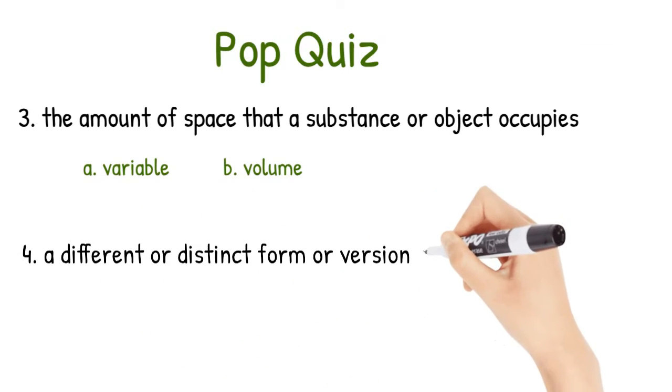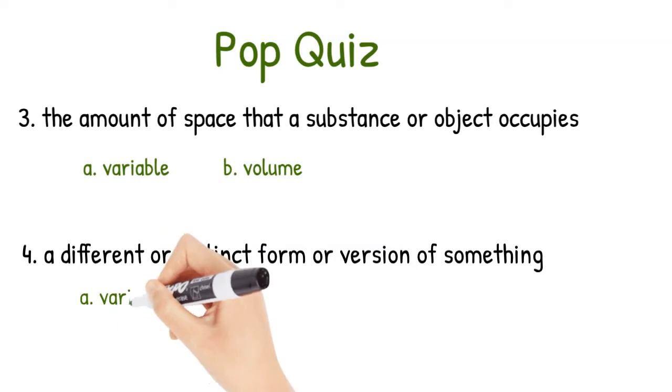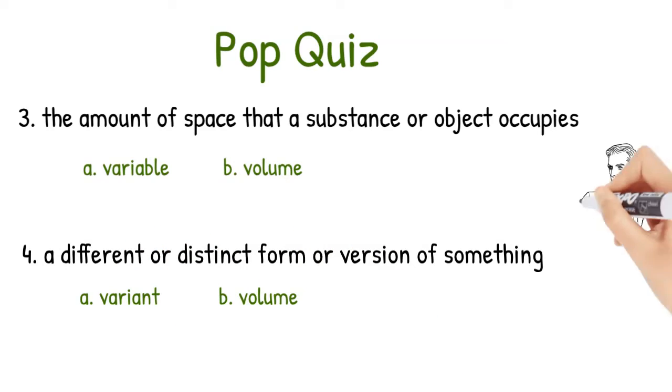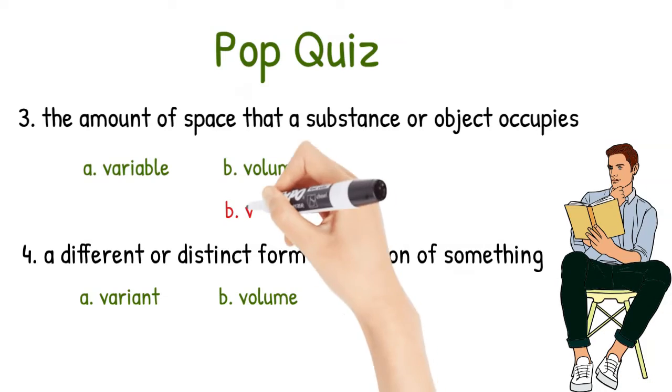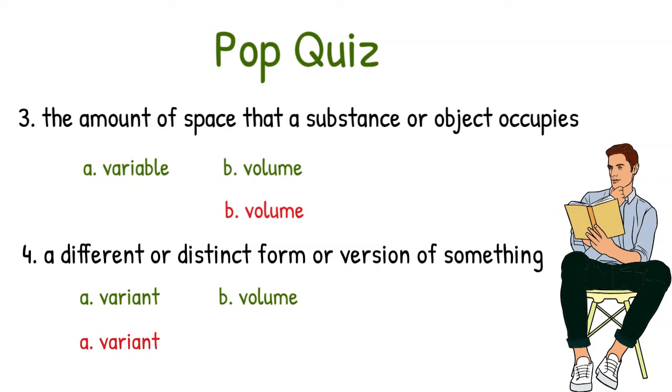Question four, a different or distinct form or version of something. A, variant or B, volume? And the answers are B, volume and then A, variant.